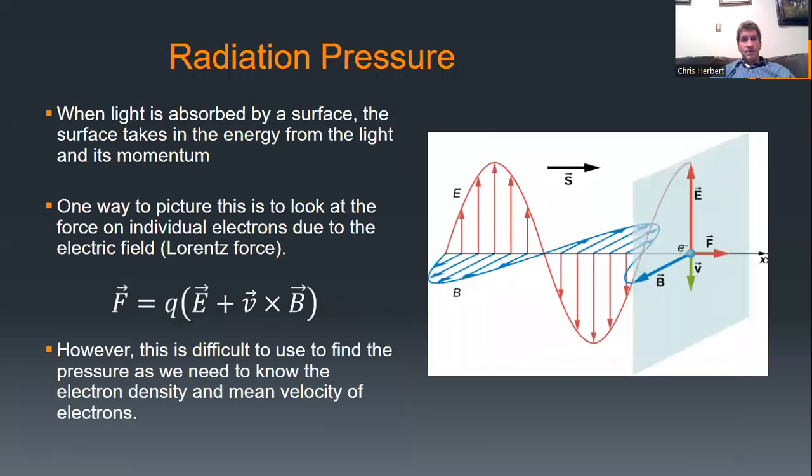Now, how do we understand radiation pressure? The electromagnetic wave has an electric and magnetic field, and these are going to interact with the electrons in whatever material they're hitting via what's known as the Lorentz force. The Lorentz force takes into account the force from the electric field and the force from the magnetic field. However, this is really difficult to quantify because you're looking at the amount of electron density, the number of electrons per surface area,